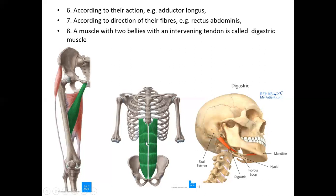Muscles can also be named according to the direction of fibers inside the muscle. Rectus abdominis has fibers running straight. Recti muscles of the eyeball similarly have straight-running fibers. A muscle with two bellies and an intervening tendon is called a digastric muscle — 'gastric' means belly — so two bellies with a tendon in between.